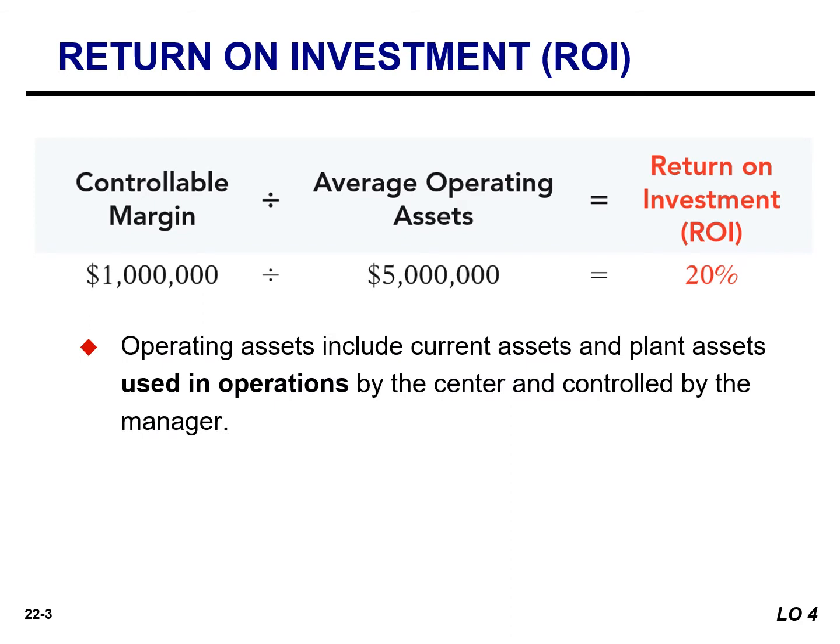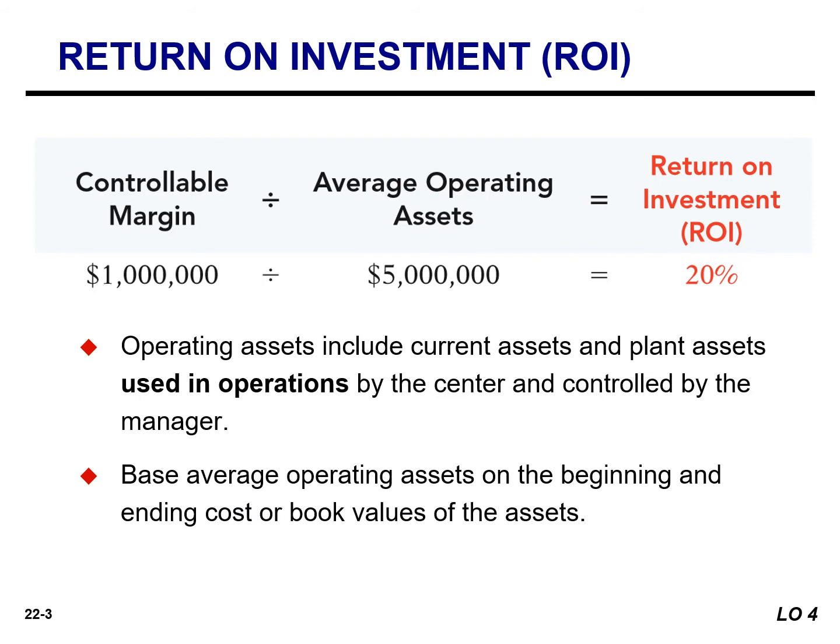Operating assets consist of current assets and plant assets used in operations by the center and controlled by the manager. Non-operating assets such as idle plant assets and land held for future use are excluded. Average operating assets are usually based on the cost or book value of the assets at the beginning and end of the year.